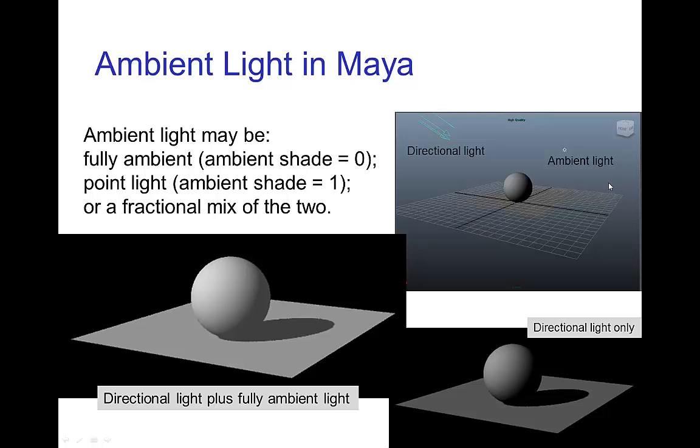If the ambient shade is set to one, then the ambient light acts just like a point light, and you can have a mixture of the two.